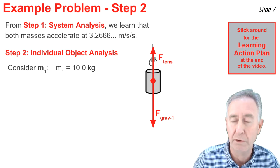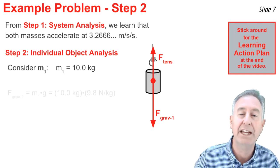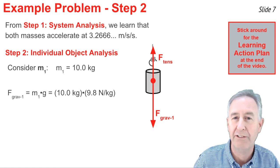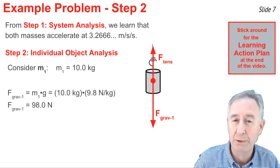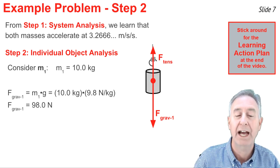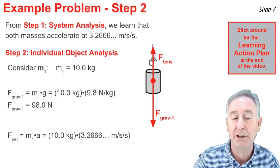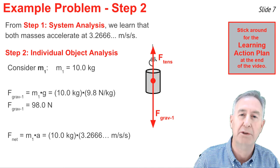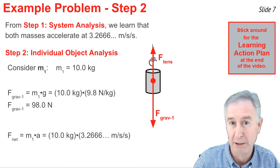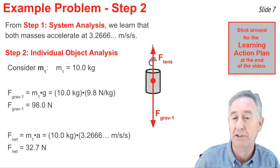I know that's a smaller force, because this object is the one that's accelerating downwards. I can calculate the downforce, the force of gravity, by going 10 times 9.8 newtons per kilogram. I get 98.0 newtons for my downwards force. I can also calculate the F net, since I know the mass of this object, and I know its acceleration from step one. When I go 10 kilograms times the 3.2666 meters per second per second, I get approximately 32.7 newtons as the net force.